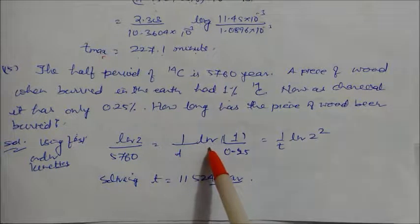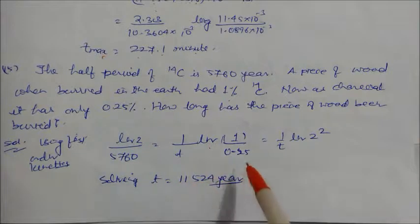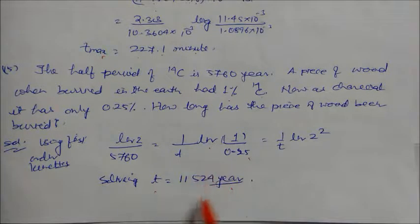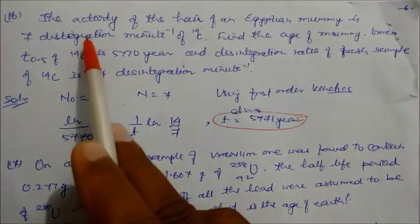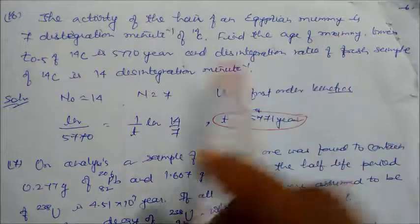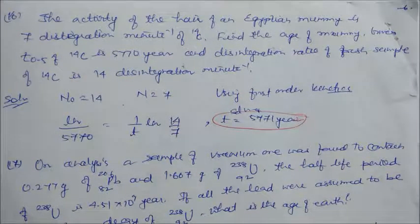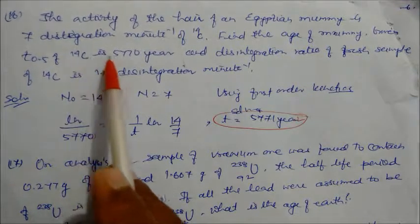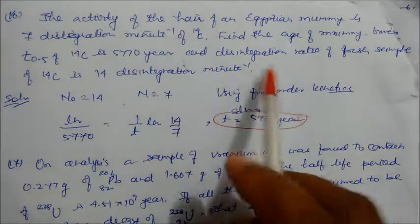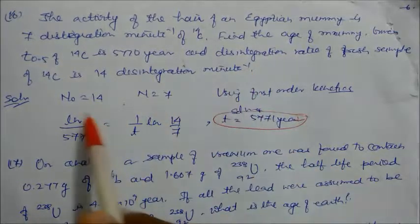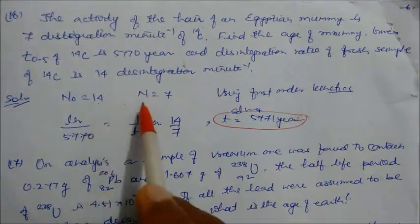Problem 16: The activity of the hair of an Egyptian mummy is 7 disintegrations per minute of C-14. Find the age of the mummy. Half-life of C-14 is 5770 years and disintegration rate of fresh C-14 is 14 disintegrations per minute. Using first order kinetics: ln2/5770 = (1/t) × ln(14/7). Solving gives t = 5770 years.